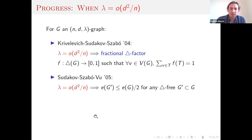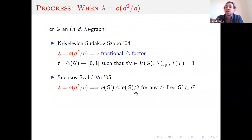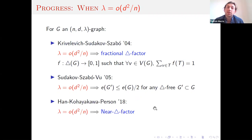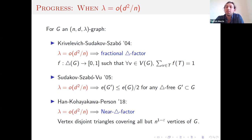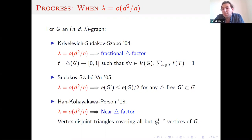A year later, Sudakov, Szabo, and Vu showed that with this condition, triangles are very well distributed — this is a Turan-type result showing you need to delete at least half the edges to eliminate all triangles. More recently, Jihan, Yoshida, Hayakawa, and Yuri Person proved that this condition is good enough for a near triangle factor — triangles covering all but a polynomially small number of vertices.